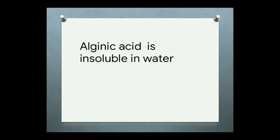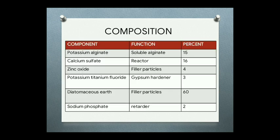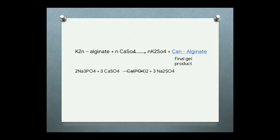To make alginic acid soluble, its composition is available in its salt form — that is potassium alginate or sodium alginate — whose function is to make the alginate soluble in water. To form a gel we need a reactor, which is calcium sulphate. The final reaction: when potassium alginate combines with calcium sulphate it forms calcium alginate, which is the final gel product. But this reaction is very fast, so we can't get enough working time.